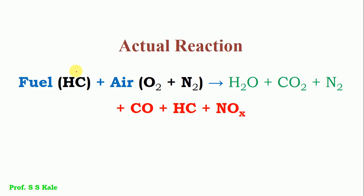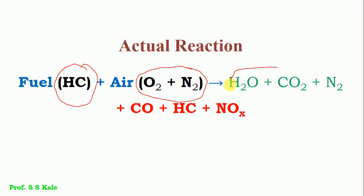In the previous lecture, we discussed that fuel is essentially hydrocarbon — whether diesel or petrol, it contains hydrocarbons. These hydrocarbons react with air, which contains oxygen and nitrogen. After the reaction, the expected products are H2O, CO2, and N2. Hydrogen reacts with oxygen to form H2O, carbon reacts with oxygen to form CO2, and N2 is an inert gas that does not react at lower temperatures.